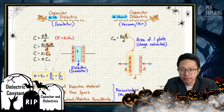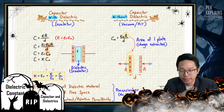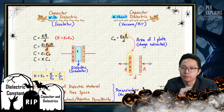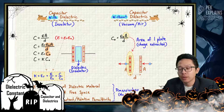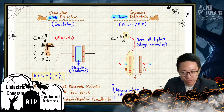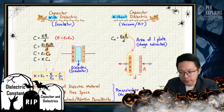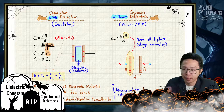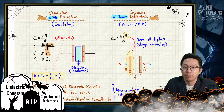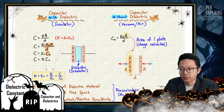So why can dielectric help the capacitor to store more charge? That is what we want to find out. Basically we have two kinds of capacitor — one is a capacitor with dielectric, and one is a capacitor without dielectric. Dielectric is an insulator, for example like paper, mica, and some other insulators can be dielectric also.